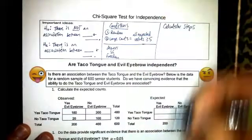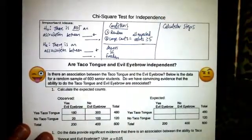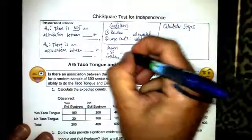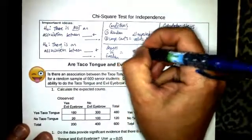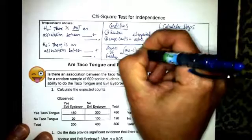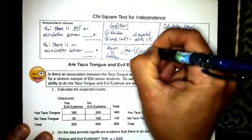Are greater than or equal to five. Degrees of freedom is going to be the rows minus one times the columns minus one.